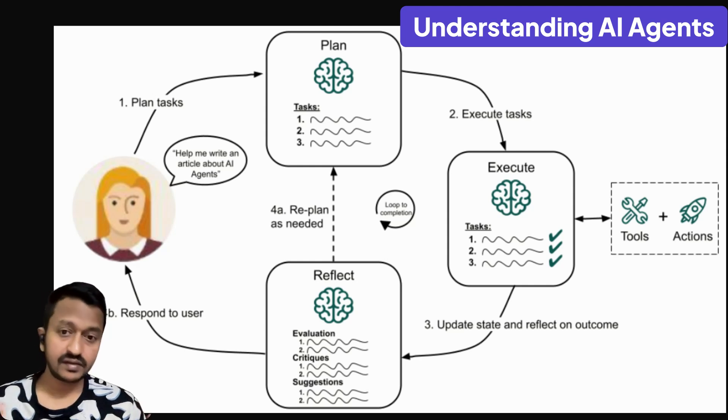And then the third step is reflection step where after executing the tasks, the agent basically evaluates the outcomes and reflects on the processes it has taken over the first two steps. This involves assessing the effectiveness of the plan, identifying any issues or areas for improvement.